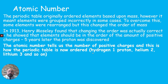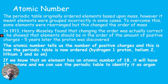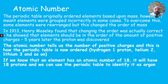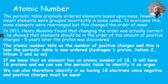By definition, the atomic number tells us the number of protons. That's how we now order the periodic table — hydrogen has one proton, helium two, lithium three, and so on. If an element has an atomic number of 18, it has 18 protons; looking that up on the periodic table reveals it is argon. Since elements are electrostatically balanced, 18 protons means 18 electrons as well.